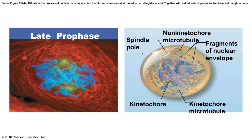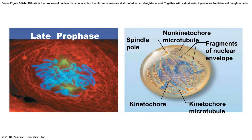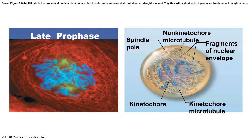In late prophase, the nuclear envelope is fragmented and gone. You can see the kinetochore microtubules, which will eventually attach to the kinetochore protein structures found at the centromeres. A kinetochore is present on each side, and in the illustration you can see how they're attached to spindles going in opposite directions. What's going to happen is all chromosomes will get pulled toward the middle — toward the equator of the cell.